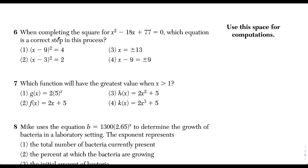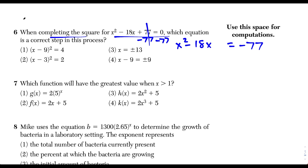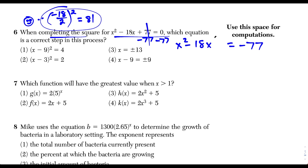Question 6: when completing the square for this quadratic equation, which equation is a correct step? Starting with the original equation, subtract 77 on both sides to get x squared minus 18x equals negative 77. For completing the square, focus on the b term, which is negative 18. Take b divided by 2: negative 18 over 2 is negative 9, then square it: negative 9 squared is 81. Add 81 to both sides.